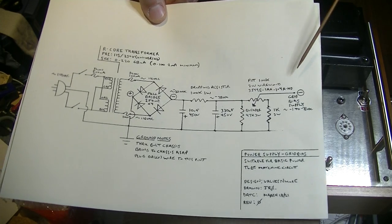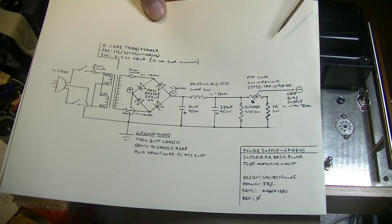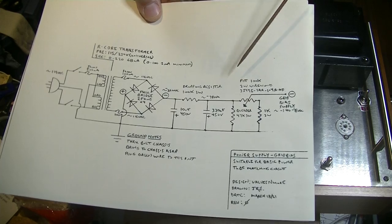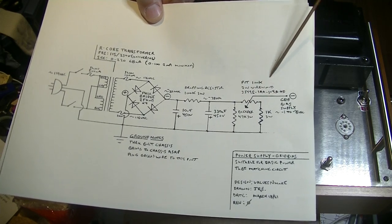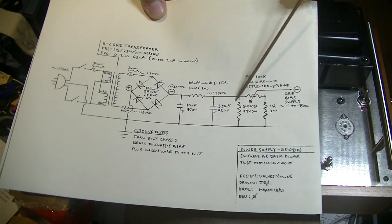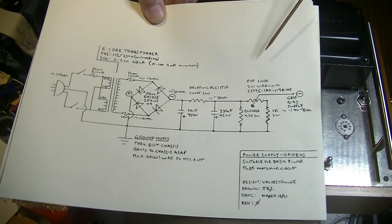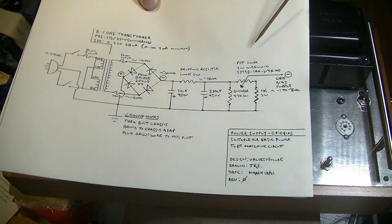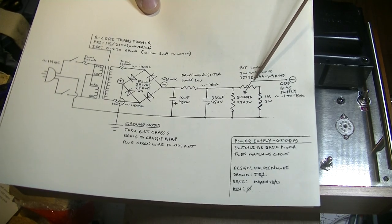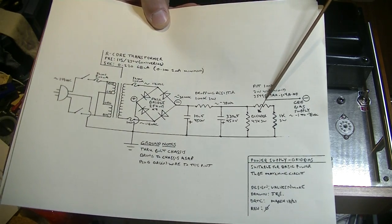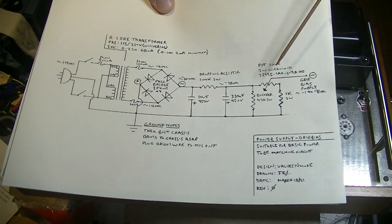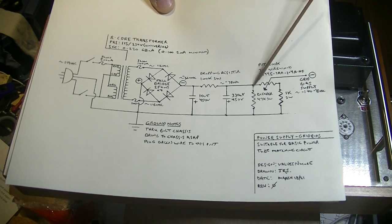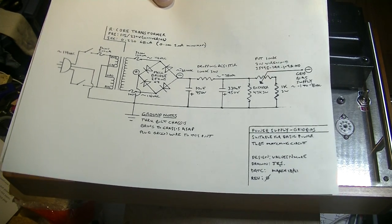Now you might say even a 2 watt wire wound variable resistor is overkill, and you'd be right, because there's virtually no current on the circuit. I'll show you that in a minute. But what I wanted was physically a strong enough unit that could handle years of service. And that meant that I went with a 2 watt model.